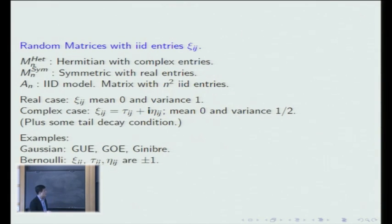So I will talk about matrices with IID entries, just for simplicity. We consider three models of random matrices. One is Hermitian with complex entries, symmetric with real entries, and we also consider an IID model. When there's no symmetry, we just have n squared IID entries.